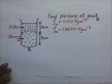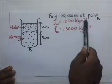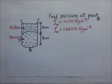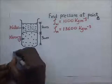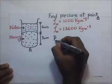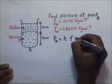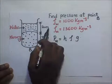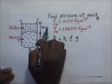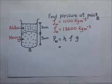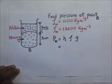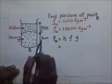The density of water is 1000 kg/m³ and the density of mercury is 13,600 kg/m³. To find the pressure exerted by water, the formula is height times density times gravity. The height of the water is 2 centimeters. Since the SI unit for pressure is newtons per meter squared, this must be converted to meters: 2 centimeters divided by 100 gives 0.02 meters.